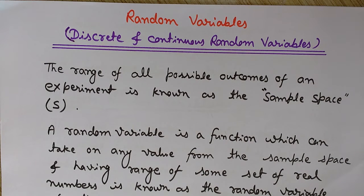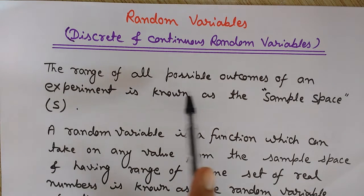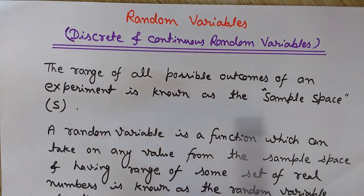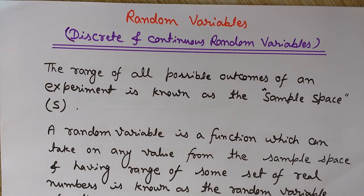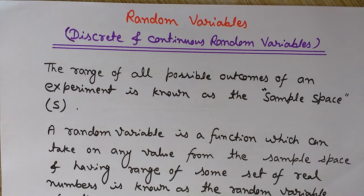What is sample space? The range of all possible outcomes of an experiment is known as the sample space. Whenever we perform any experiment — like tossing three coins at the same time — we may have heads or tails on any of these coins. We may have heads on all three coins, tails on all three, two heads and one tail, or two tails and one head. There are a total of eight possibilities, and all these outcomes form the sample space.